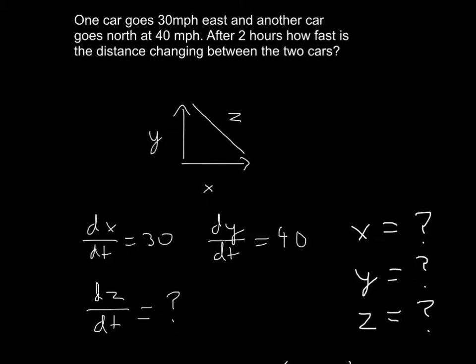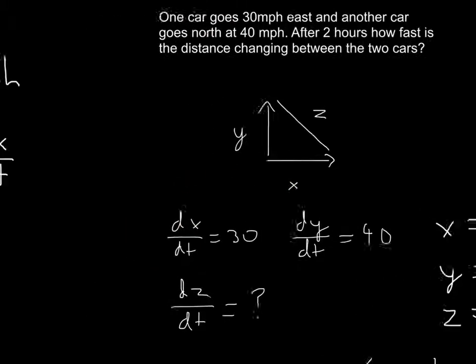After all this, we need to list out everything we know. We know that dx/dt is 30. You might be tempted to put 30 as X, but dx/dt is miles per hour, whereas X is just in miles.